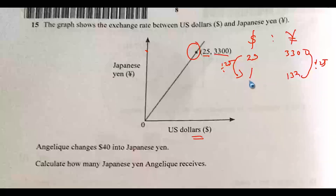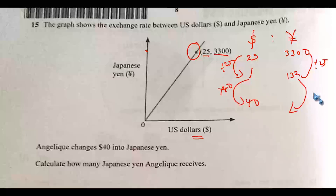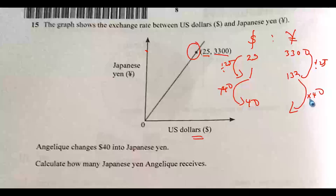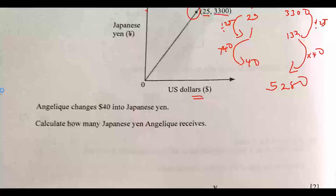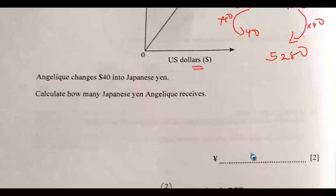To get the value of 40 dollars, multiply 132 by 40, giving 5280 Japanese yen. So 40 US dollars gives 5280 Japanese yen.